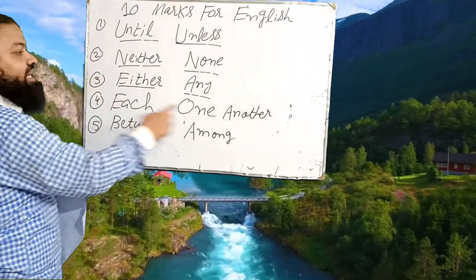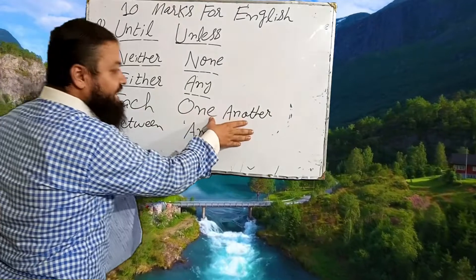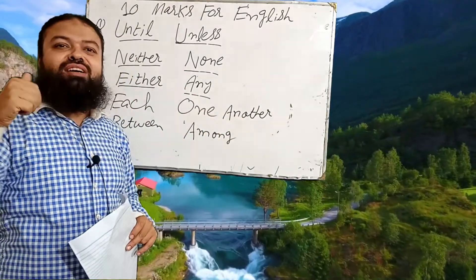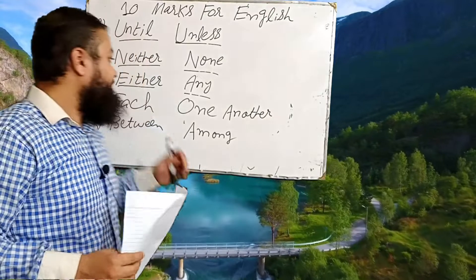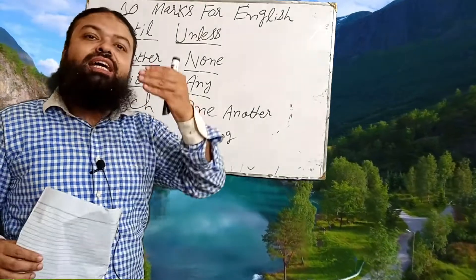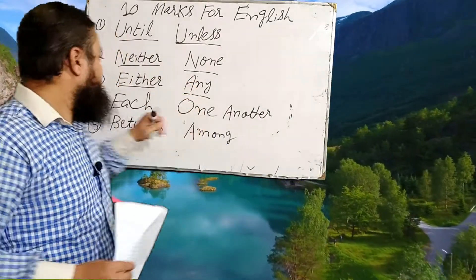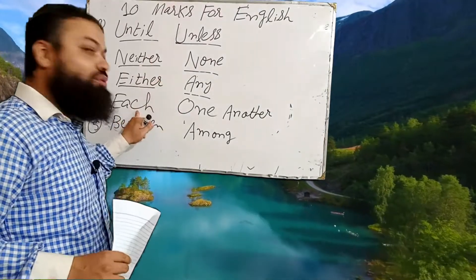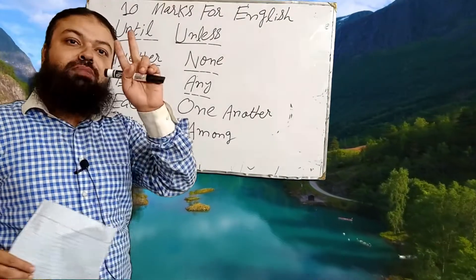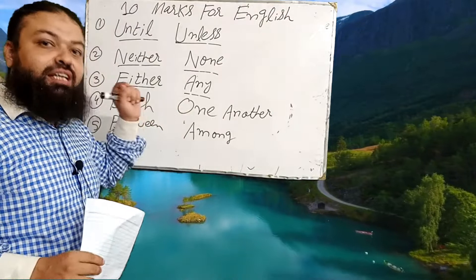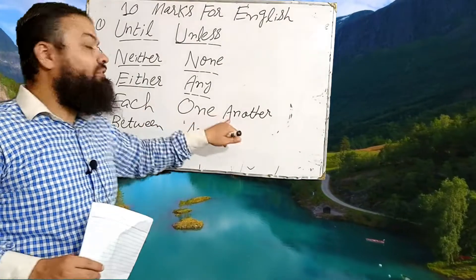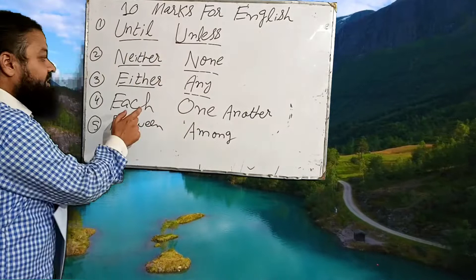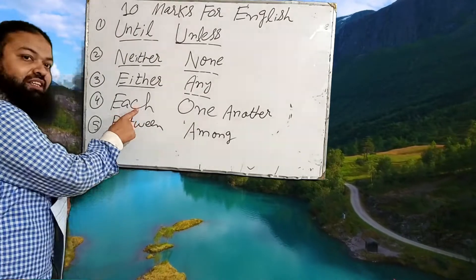The fourth one is 'each other' and 'one another.' 'Each other' is used for two persons or two things, and 'one another' is used for three or more. For example, 'the three brothers hated each other' is wrong, because 'each other' is used for two. The correct sentence is 'the three brothers hated one another.' 'The two brothers hated each other' is correct.